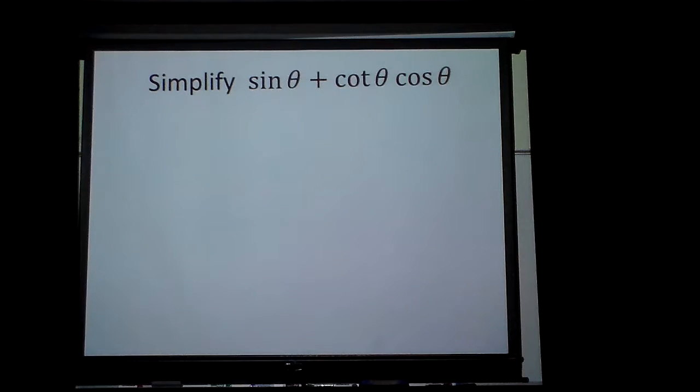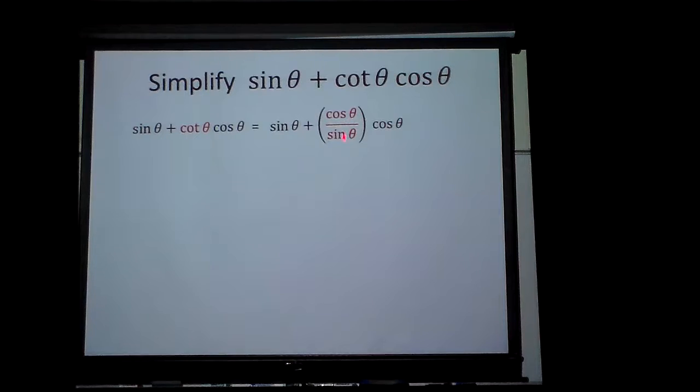And some of the easiest things to do is to write things in terms of sine and cosine. I've got a sine, I've got a cosine. Can I rewrite cotangent in terms of sine and cosine? I sure can, because cotangent is the same thing as cosine divided by sine.